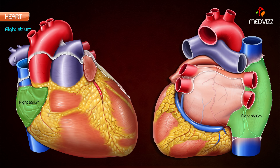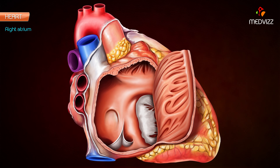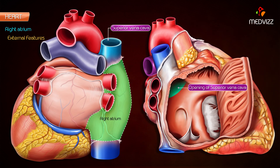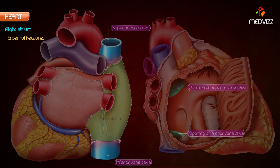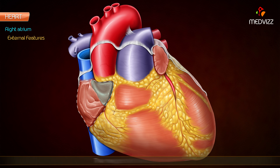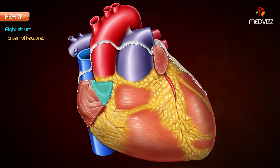The right atrium is a somewhat quadrilateral chamber situated behind the right side of the right ventricle. It consists of a main cavity and a small outpouching called the auricle. Externally, the right atrium is elongated vertically, receives the superior vena cava at its upper end and the inferior vena cava at its lower end. The upper anterior part is prolonged to the left to form the right auricular appendage. The margins of the auricle are notched, and the right auricle overlaps the roots of the ascending aorta completely.